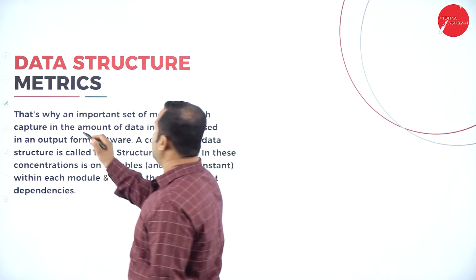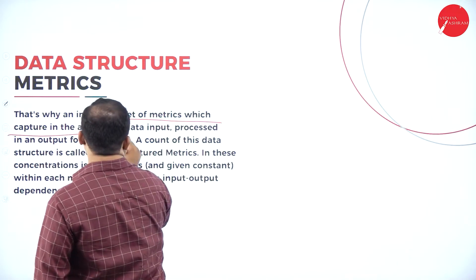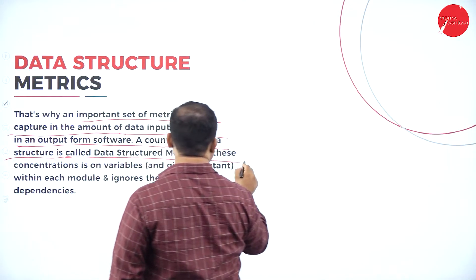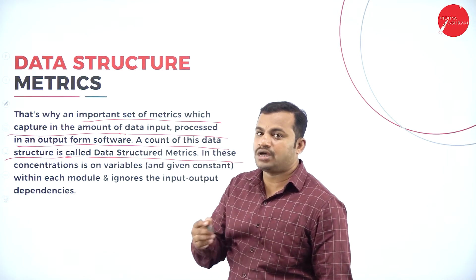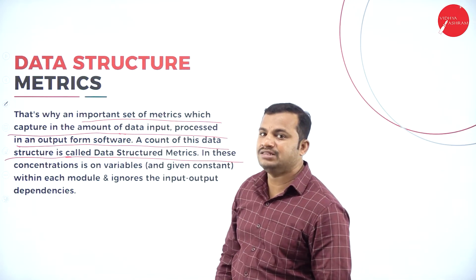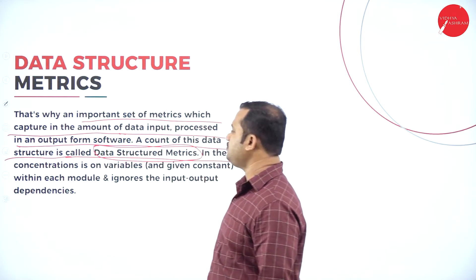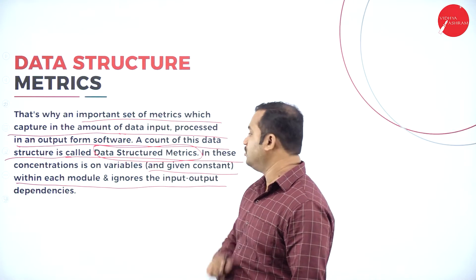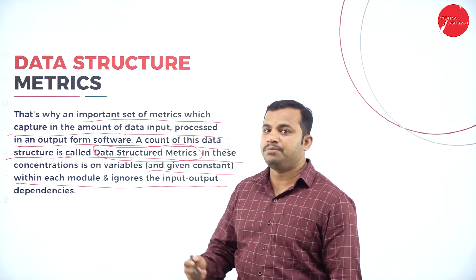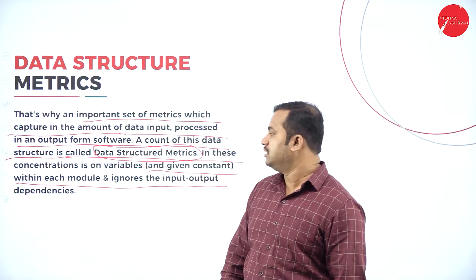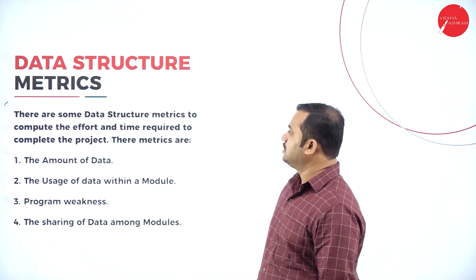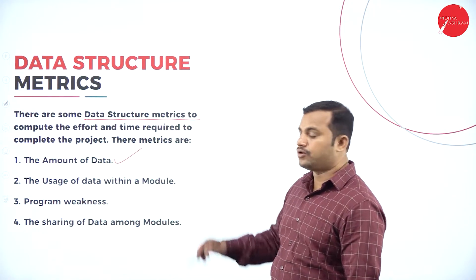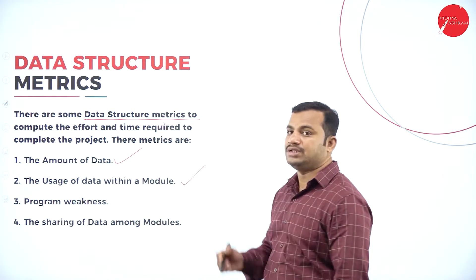So, an important set of metrics which capture the amount of data input processed and output from software is called data structure metrics — that is the input given to the system and what is output produced by utilizing the implicit details. The concentration is on variables and constants within each module and ignores input/output dependencies. Some of the data structure metrics include: first, the amount of data — the number of variables also called VARS — where variables, constants, and labels are added up to get the value N2, the total number of operands used in the program.